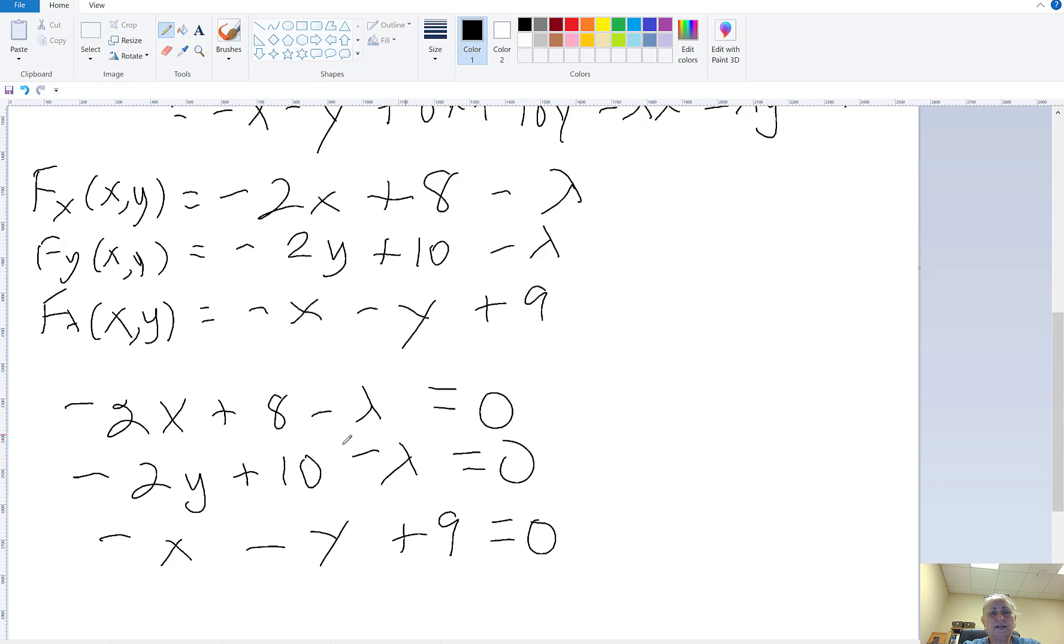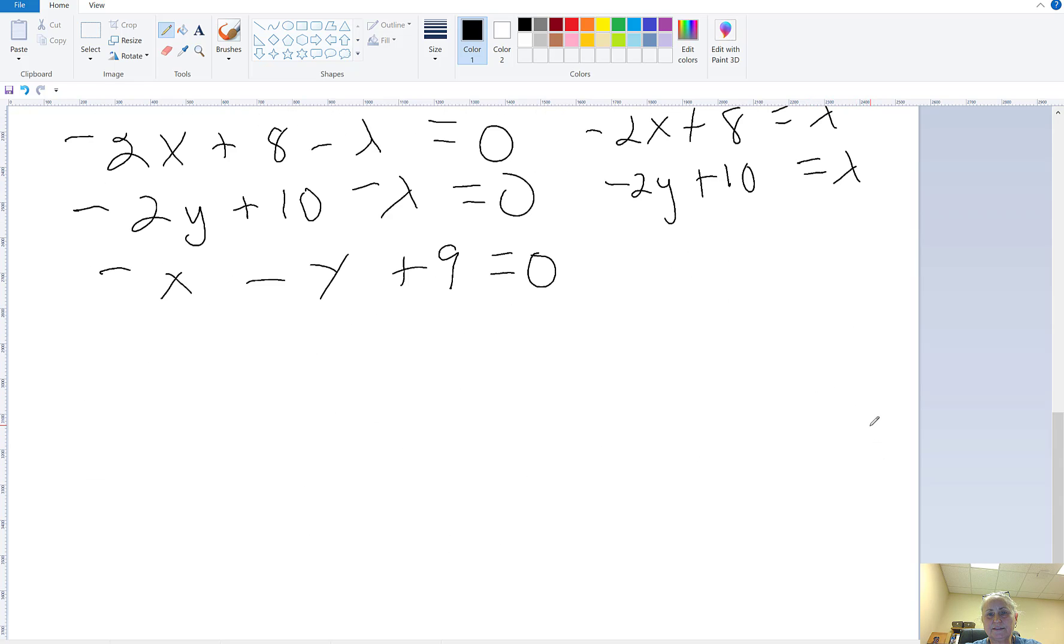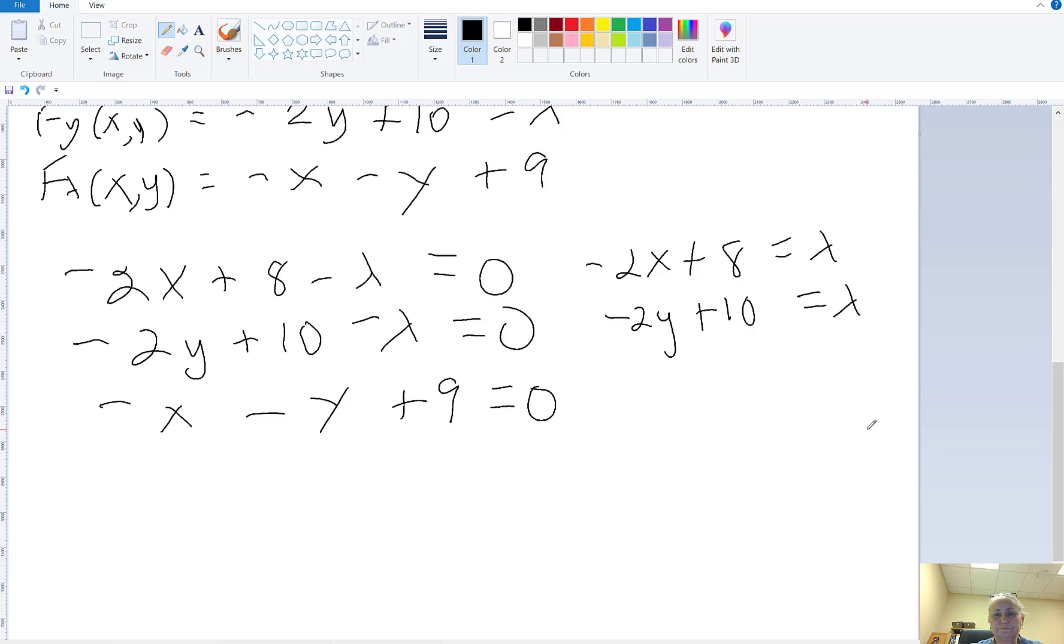So, we've got to solve three equations, three unknowns. I notice that both of these have a minus lambda, so minus 2x plus 8 equals lambda, minus 2y plus 10 equals lambda. And since these are both equal to lambda, I can set them equal to each other. Negative 2x plus 8 equals negative 2y plus 10.